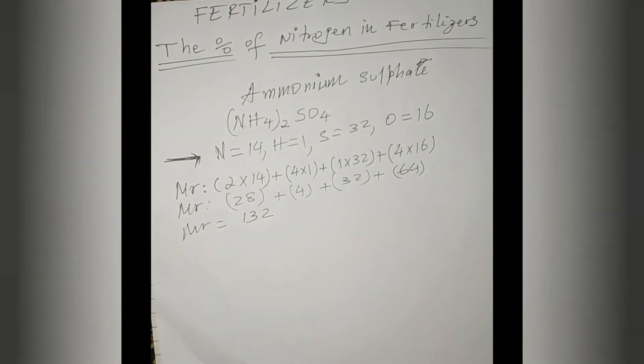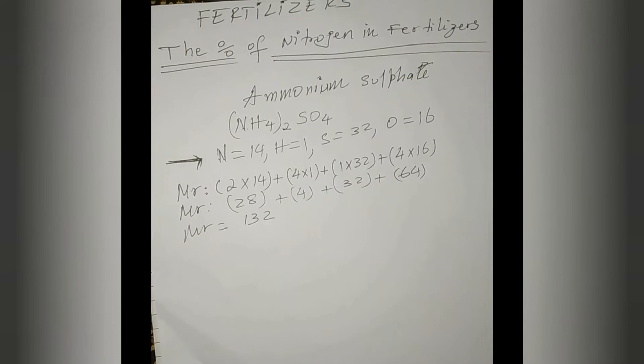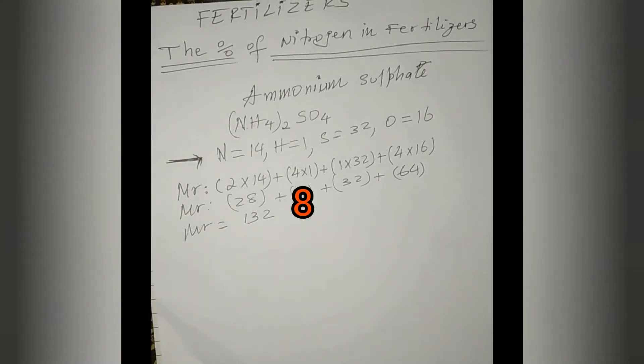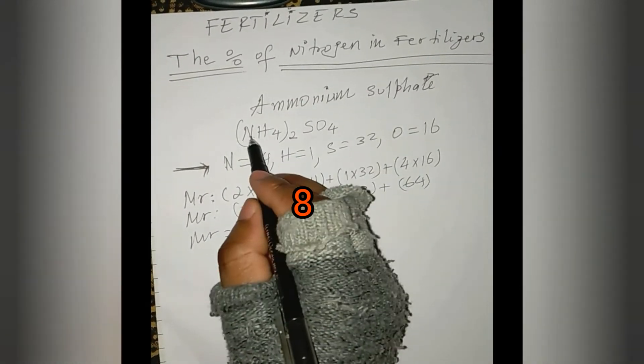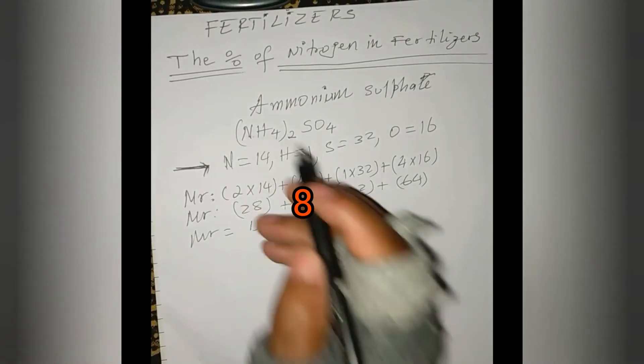To find out the percentage of nitrogen in this compound, first we have to look at how many moles of nitrogen we have. We have 2 moles.